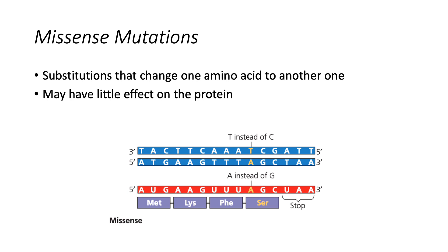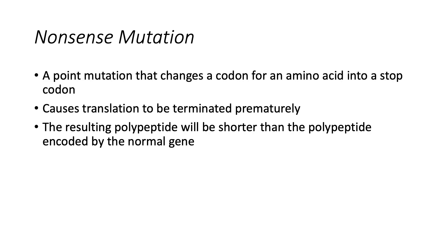That is, the altered codon still codes for an amino acid and thus makes sense, although not necessarily the right sense. But a point mutation can also change a codon for an amino acid into a stop codon. This is called a nonsense mutation, and it causes translation to be terminated prematurely. The resulting polypeptide will be shorter than the polypeptide encoded by the normal gene, and nearly all nonsense mutations lead to non-functional proteins.